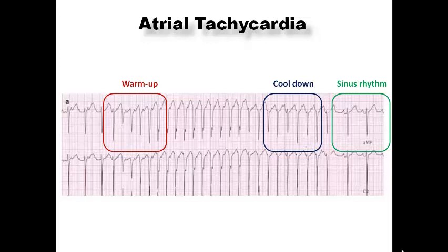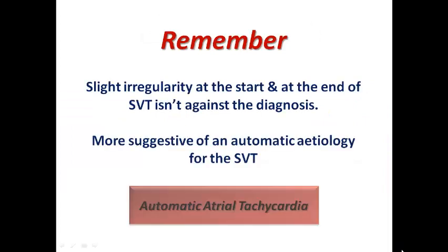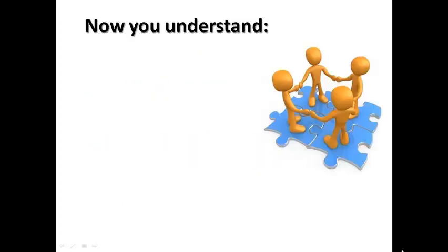This sign is very suggestive of automatic atrial tachycardia. In re-entrant SVT such as AVNRT or AVRT, heart rate is fixed because the re-entrant mechanism does not vary. In the automatic mechanism, slight irregularity appears especially at the start and end of tachycardia. Remember: slight irregularity is acceptable in SVT and should not distract you from the SVT diagnosis if all ECG features point toward SVT and suggest an automatic etiology — most commonly automatic atrial tachycardia.